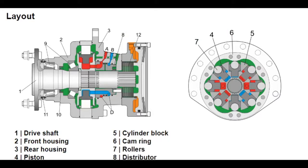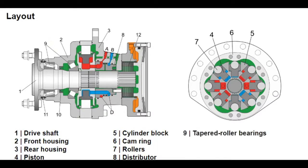The cylinder chambers (E) are connected to ports A and B through axial bores and annular channels (D) in the distributor. The front half of the housing usually has two tapered roller bearings (9) that are able to absorb high axial and radial forces. A shaft seal (10) is designed to seal the unit and prevent leaks.